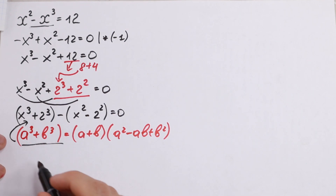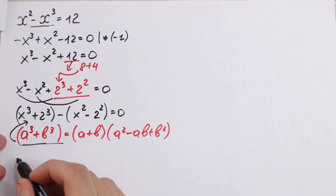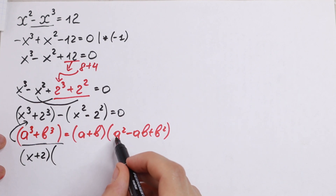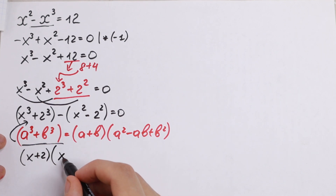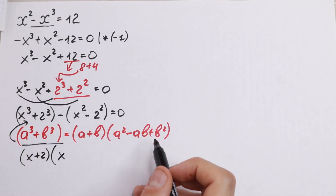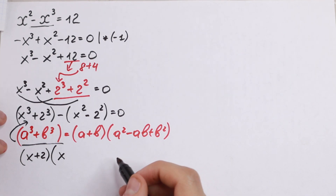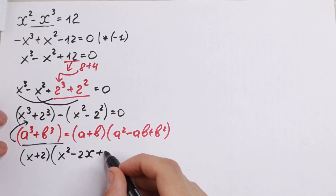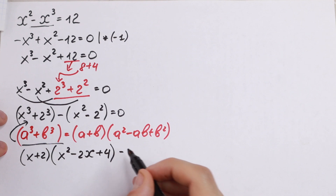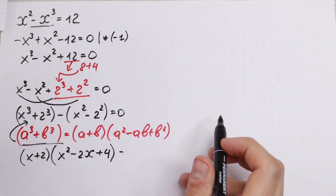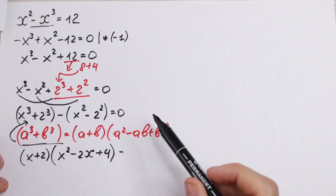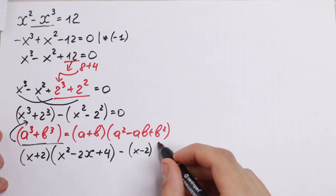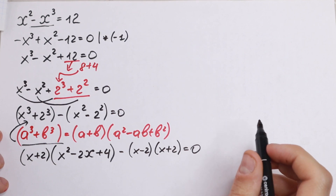Here a is x and b is 2. So applying the formula, the first factor is (x plus 2) and the second parenthesis is x squared minus 2x plus b squared, which is 2 squared equals 4. And as you can see, we also have a difference of squares here, which we can split as (x minus 2)(x plus 2) equal to 0.